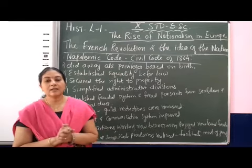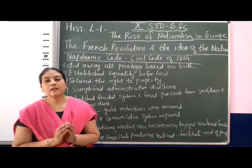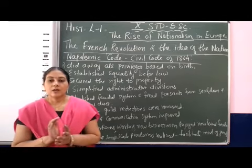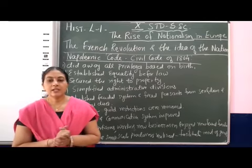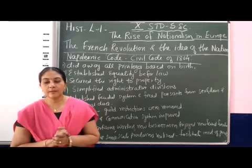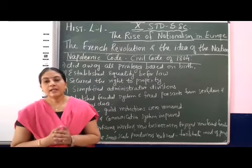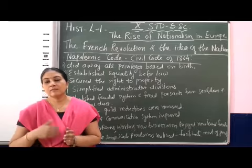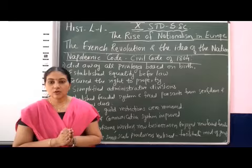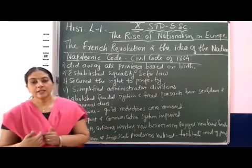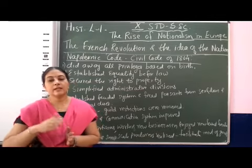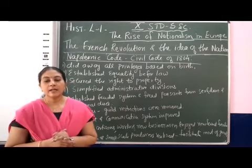The students and the educated class were all in favour of changing their own form of government. So when French armies reached these countries to help liberate them from their non-active system of government, political changes also occurred in France. The French Revolution had ended by that time and the National Assembly was also overthrown, and then a new form of government came in France.